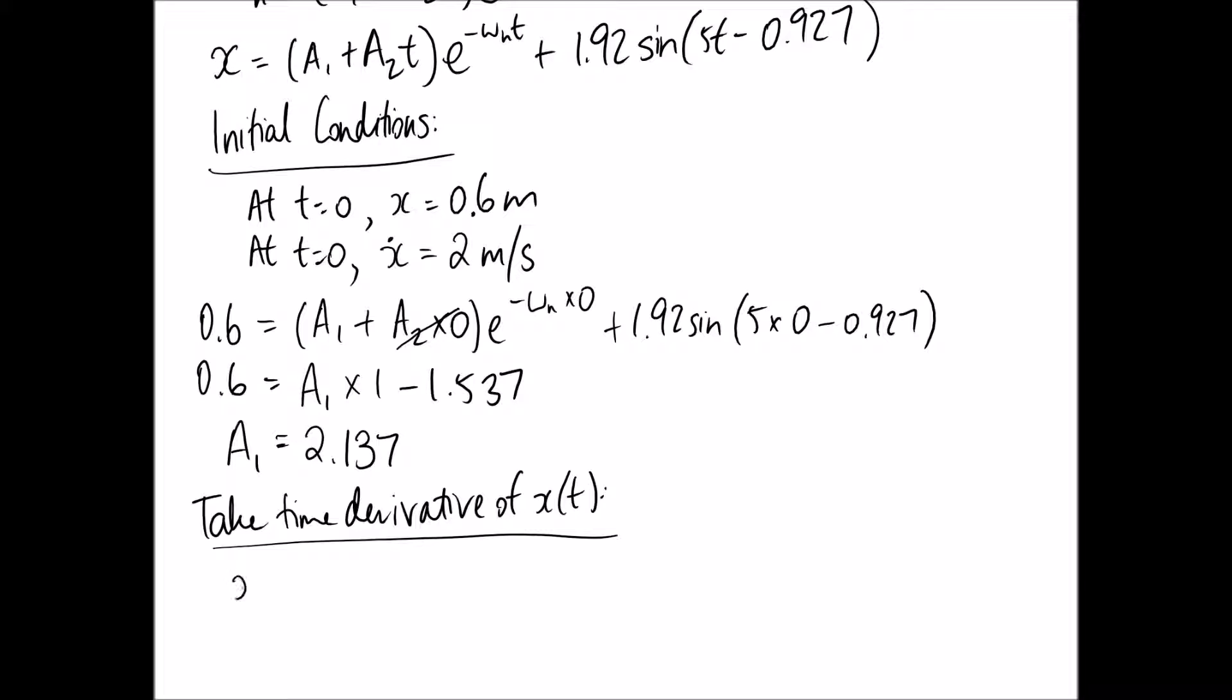So taking the derivative of this equation here. x, its derivative is x dot, which is the velocity. And on this one here we're going to have to apply the product rule because we have time tied up in the bracket and also in the exponent. So for that, we hold the first term constant and multiply by the derivative of the second part.